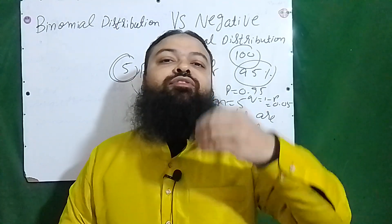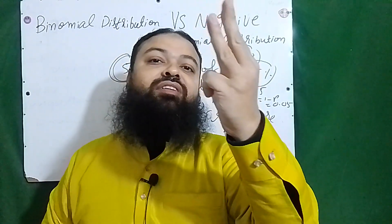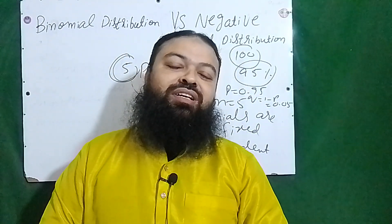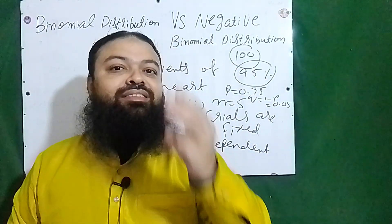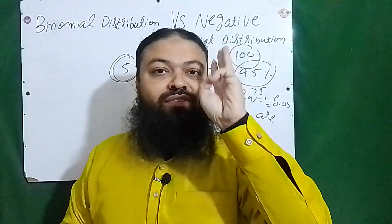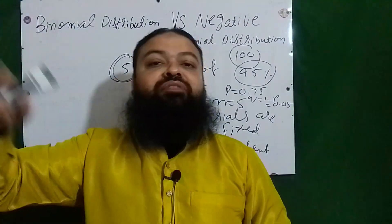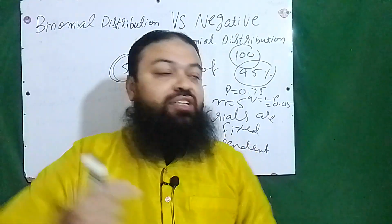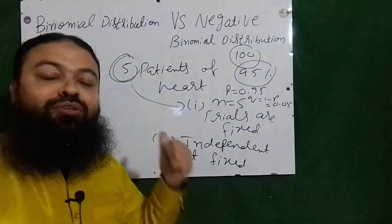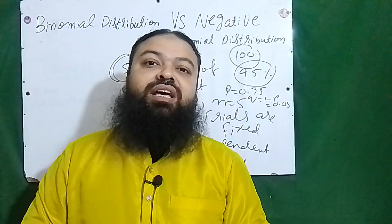In negative binomial distribution, if we say we will take patients again and again until we get three survivals, then that becomes the negative binomial distribution. Now our successes are fixed — we need three patients who will survive. We might get those three on the 8th, 10th, 15th, or 20th patient. Trials are not fixed, but the number of successes is fixed. This is a very important example of negative binomial distribution.